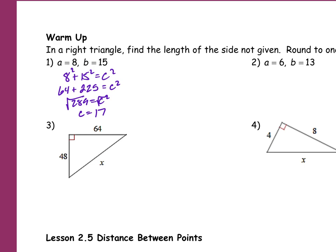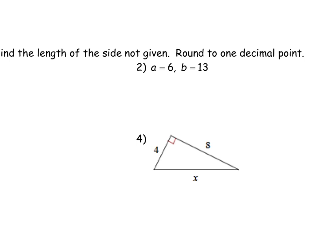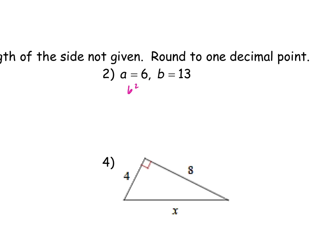Okay, if we go to number 2 — I'll make it bigger so Camille can see. 6 squared plus 13 squared equals C squared. So 6 squared is 36, and 13 squared is 169, equals C squared. So that's going to be 205. 205 equals C squared, and I square root both sides. C is approximately going to be equal to — someone tell me. I think it's 14.3.